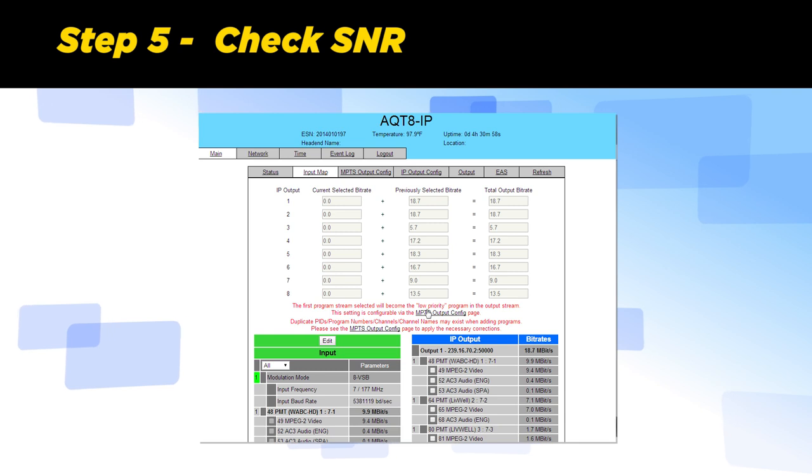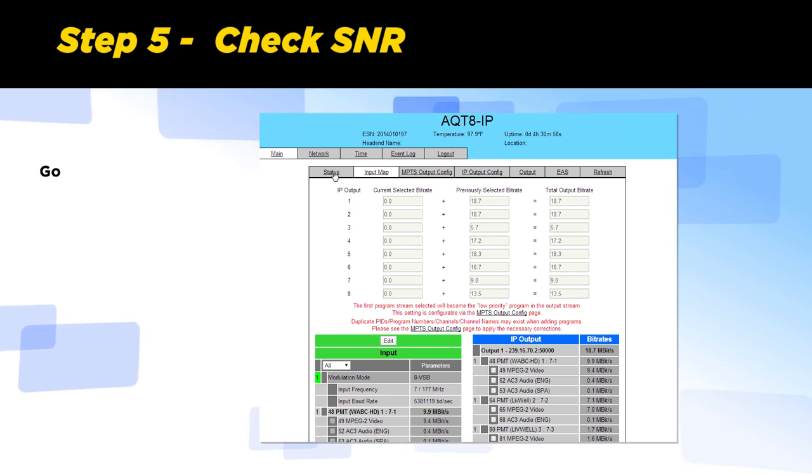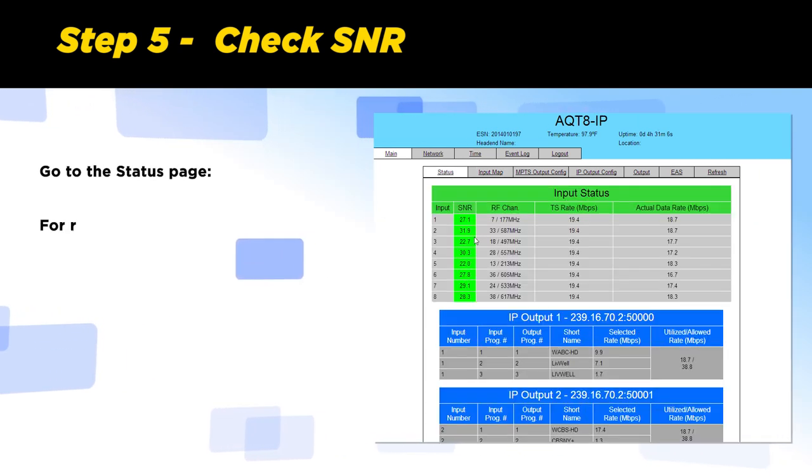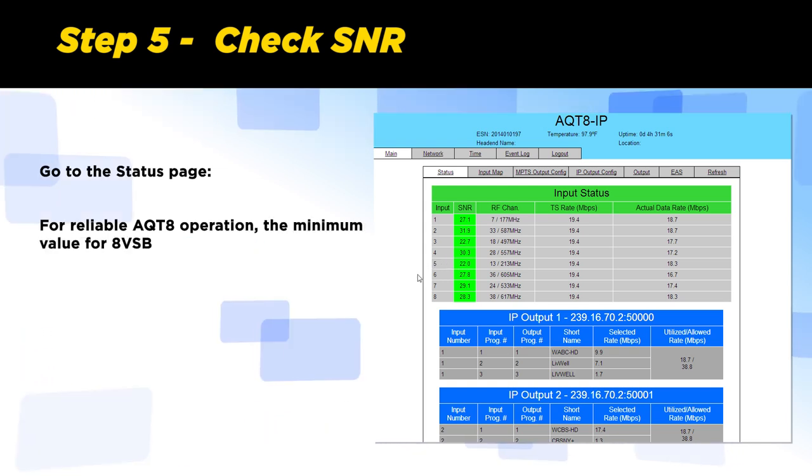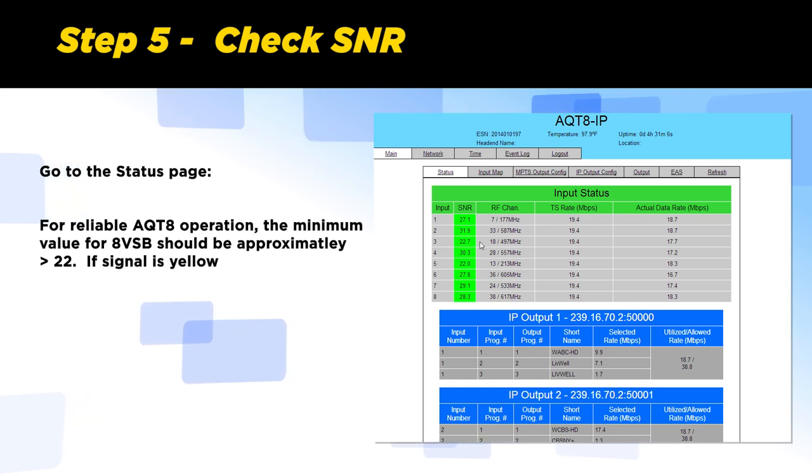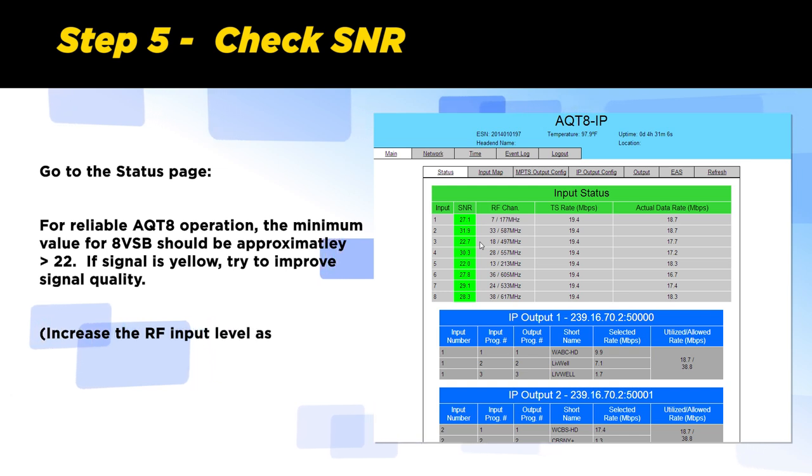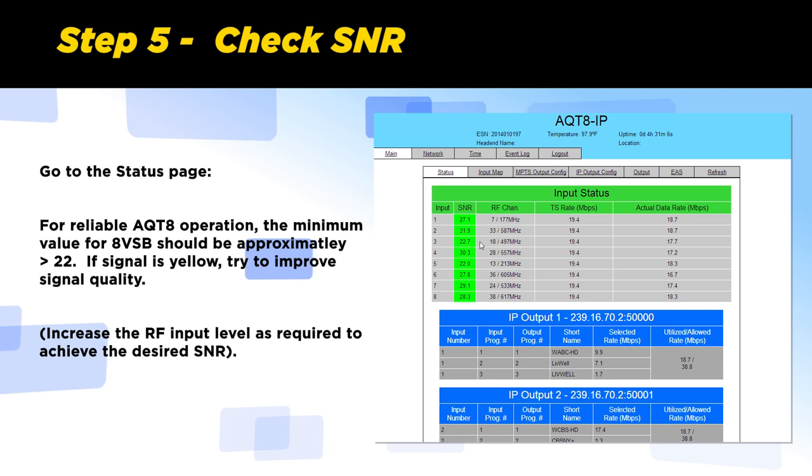Step 5: Check SNR. Go to the status page. For reliable AQT8 operation, the minimal value for 8 VSB should be greater than 22. If the signal is yellow, try to improve signal quality. Increase the RF input level as required to achieve desired SNR. Now we have successfully configured the inputs.